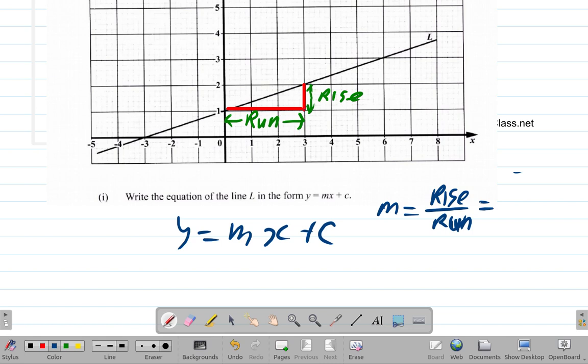The gradient equals rise divided by run. What's the rise? The rise here is 1. One over what's the run? 1, 2, 3. Is it positive or negative? It's positive. The gradient is 1/3.